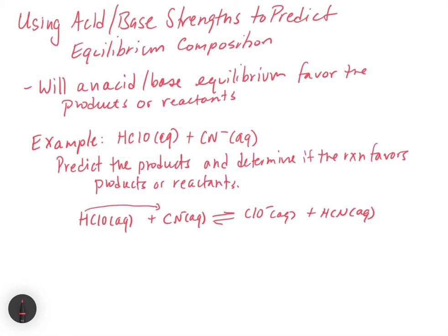This equation is correct, but there's an interesting question that arises: what should the HClO react with? There are actually two bases present — and two acids present — because there is water present in all of this. So the question becomes, is the HClO going to react with water, or is CN⁻ going to be the acid, or is water going to be an acid or a base?